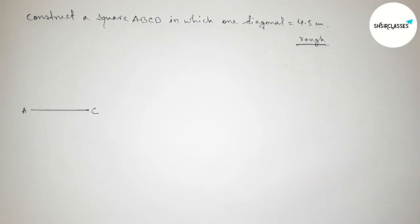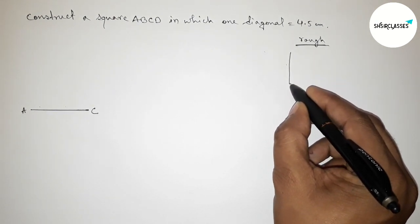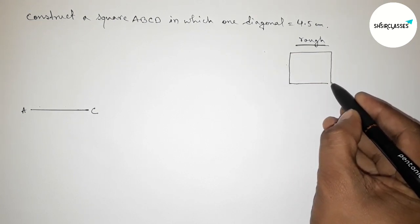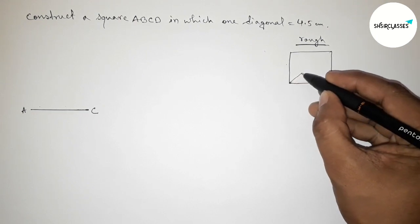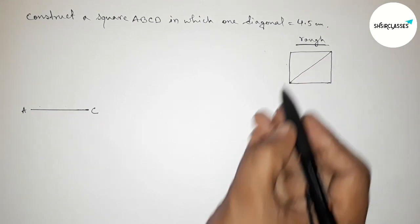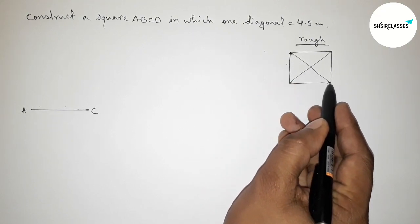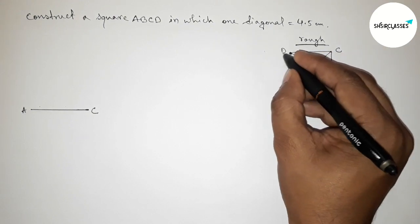First we have to draw here a square roughly by this way. So first drawing here a square roughly by this way. Now joining this diagonal first, then joining this diagonal. Now taking here ABCD.